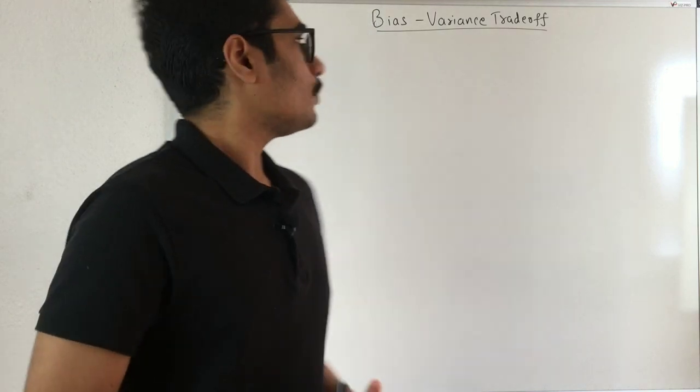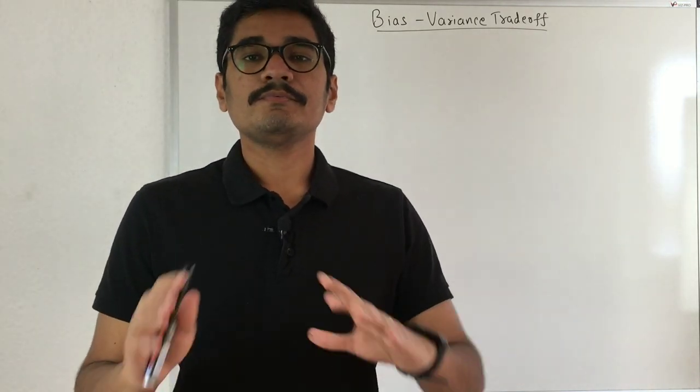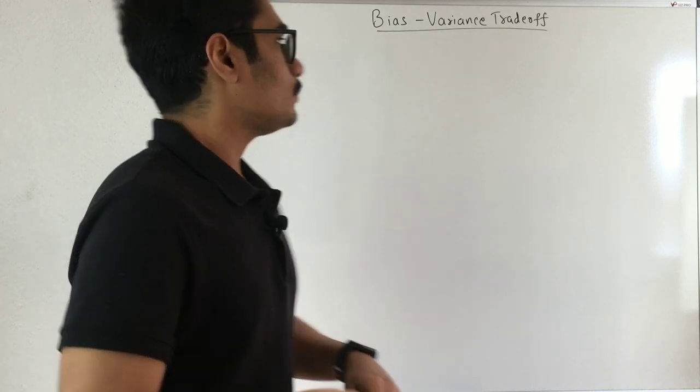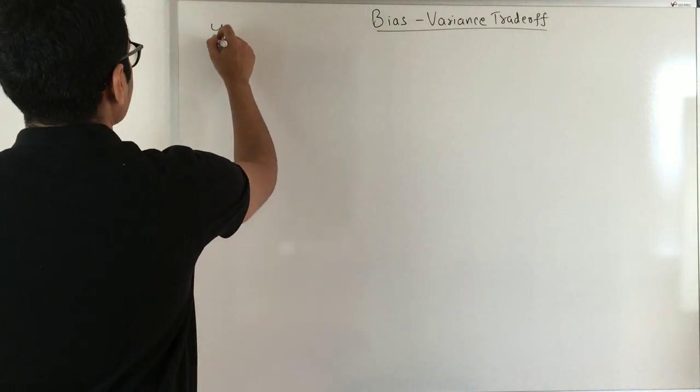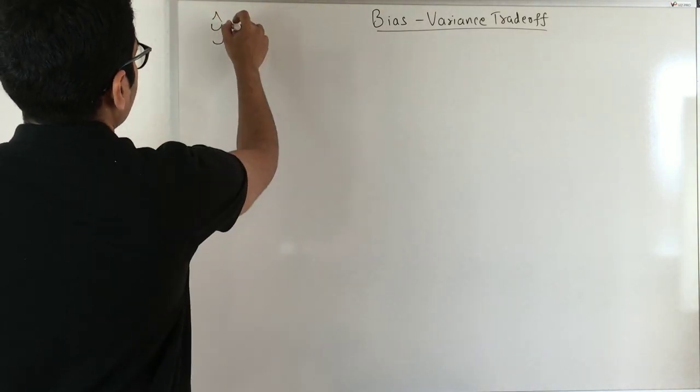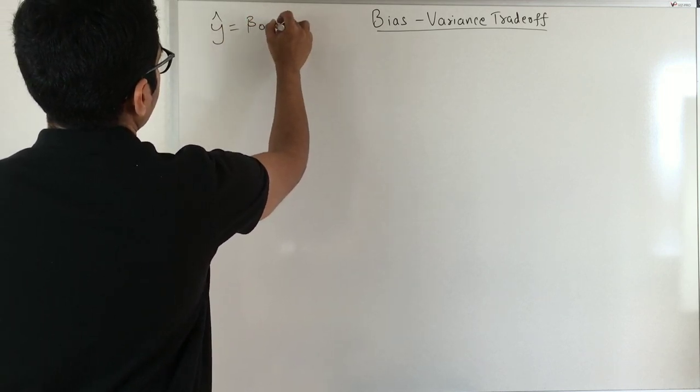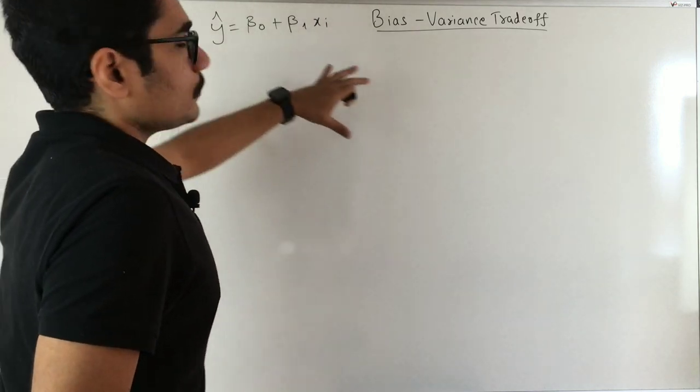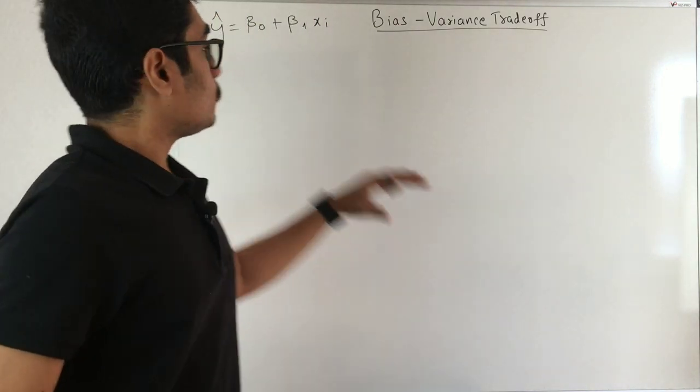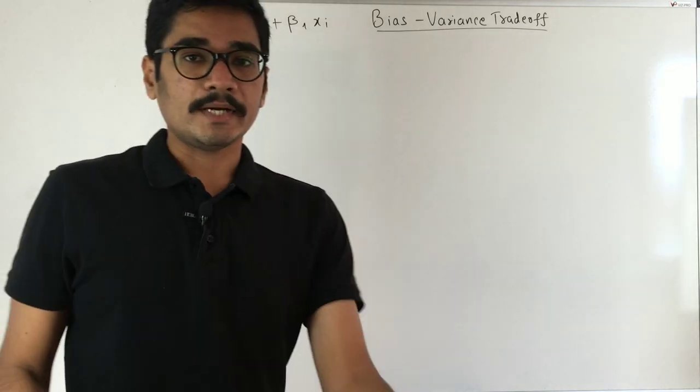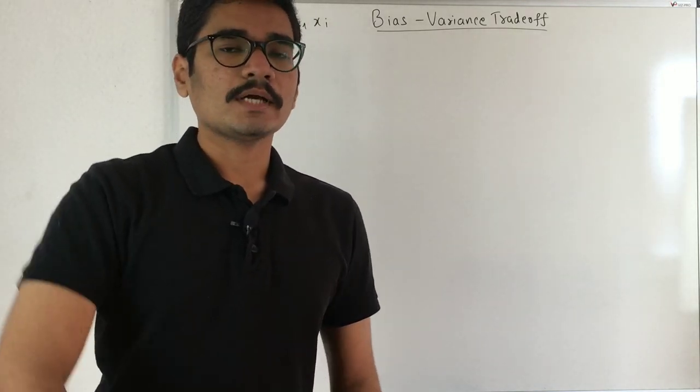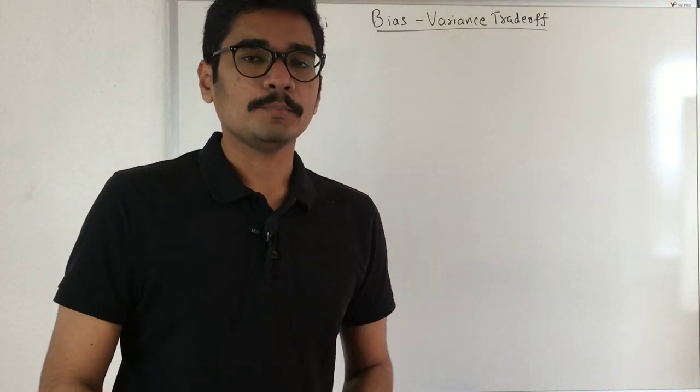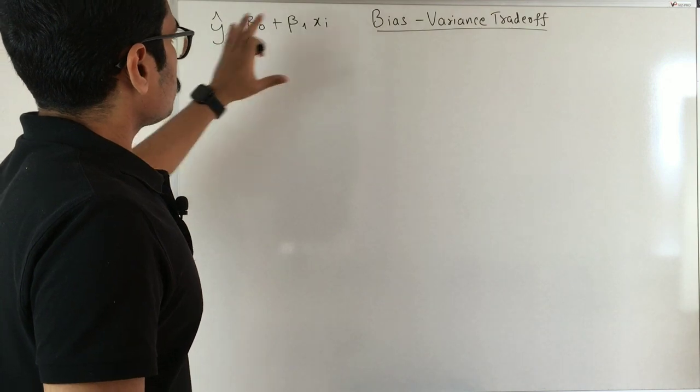For bias and variance tradeoff, we'll take a simple example of a linear regression model. So we want to predict something. That is my y-cap, and I have coefficients, say beta naught plus beta 1 x1 or Xi. This is my general formula for estimating or predicting anything. We're doing simple prediction here.